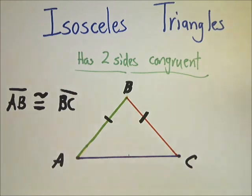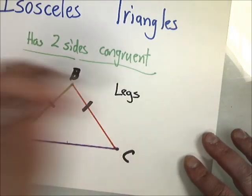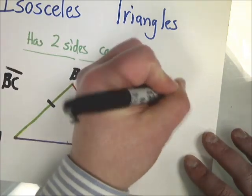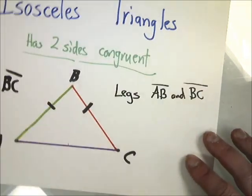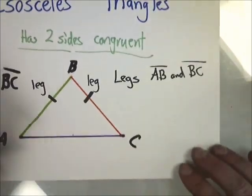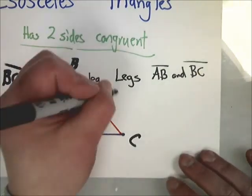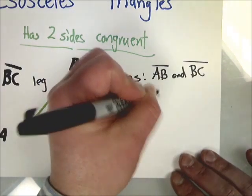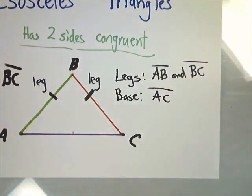Now, with an isosceles triangle, there's a bit more added vocabulary to it. When I have these sides being the same, the two sides that are the same are called the legs. So in this case, AB and side BC are considered legs. The two congruent sides are the legs. Now, the side below is known as the base. Should have two legs and one base, so my base here is AC.